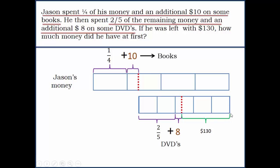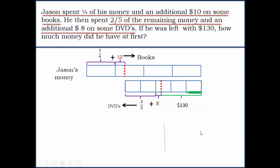It's very clear that when you combine these two together, which constitute three units, that should equal $130 plus $8. This whole area which represents three units is actually equal to 130 plus 8, which is 138.